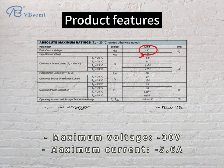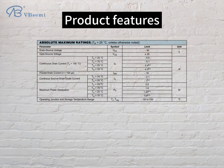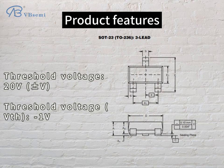Maximum voltage: -30V. Maximum current: 5.6A. Threshold voltage VGS=20V. Threshold voltage VTH: -1V.